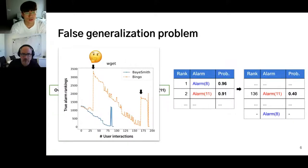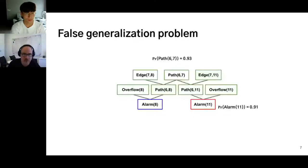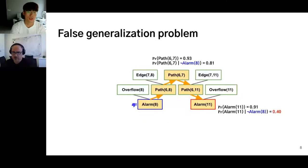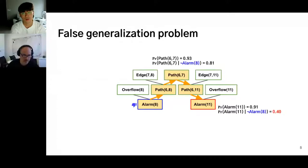The problem is due to falsely generalizing user feedback to suppress true alarm ranking. In the Bayesian network, initially the true alarm 11 has a rather high probability of 0.91. When the user says alarm 8 is false, the system recomputes probabilities via conditional inference — propagating the blame of the false alarm to other facts in the graph. As the feedback is given, the probability of the true alarm drops from 0.91 to 0.4.